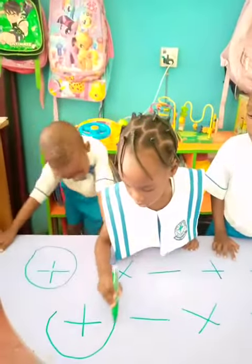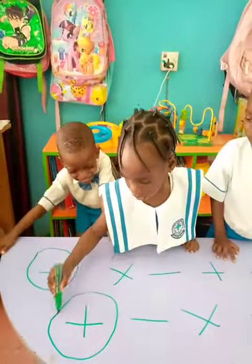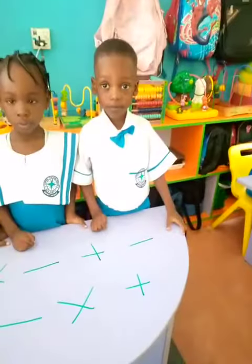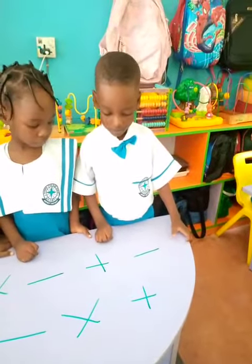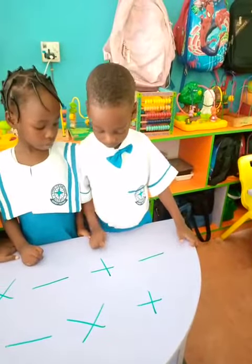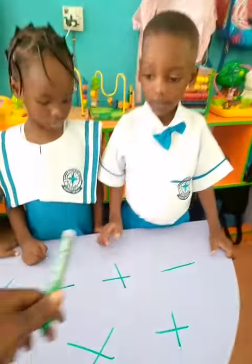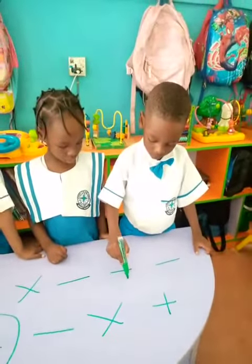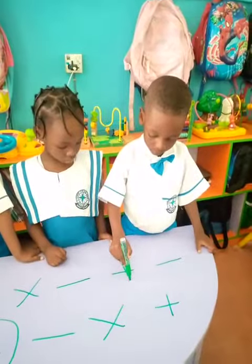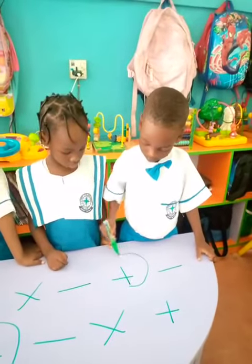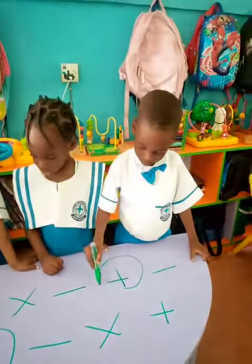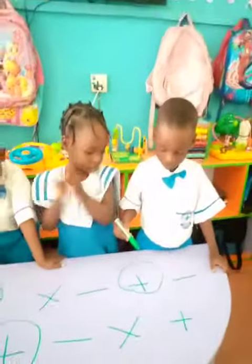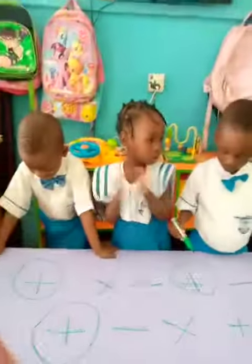Chine Do, show me your own plus — where's plus? Beautiful. Now take the mark and circle yours. Circle it. Beautiful. Let's clap for Chine Do — well done. Nice one, guys.